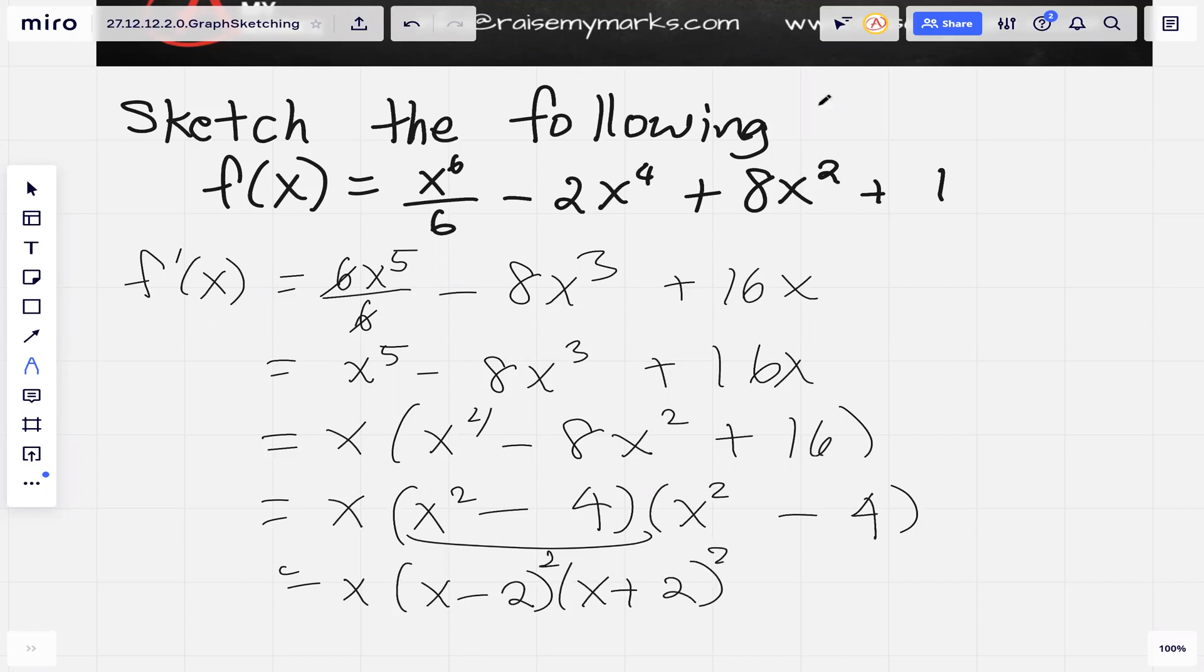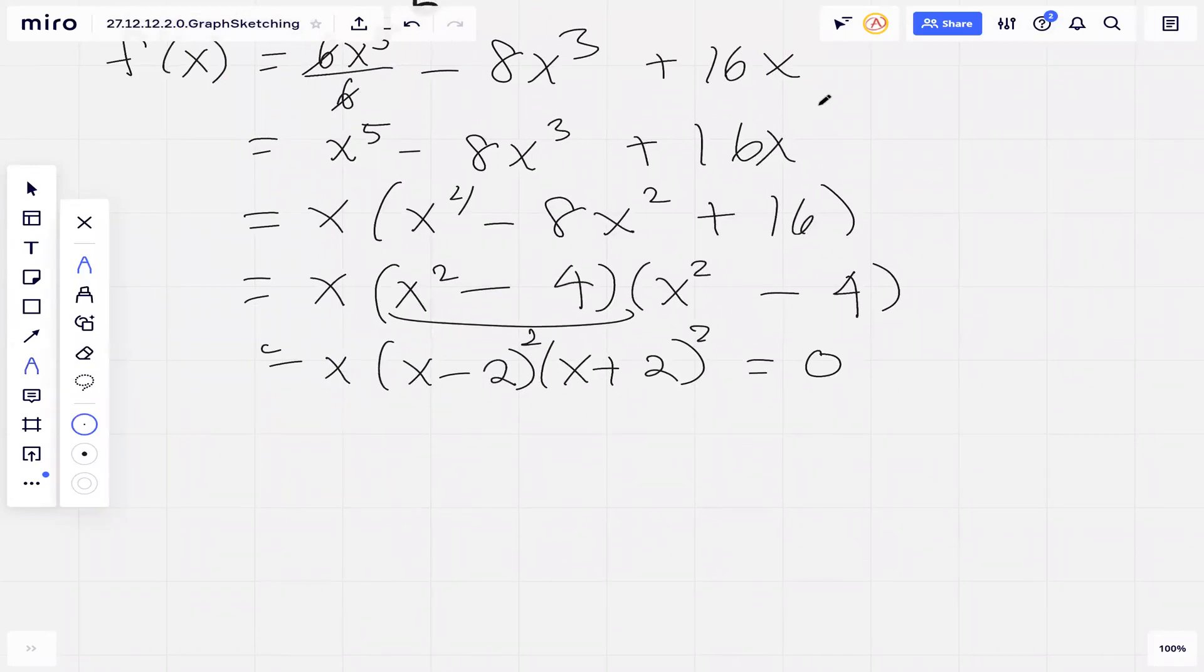We factored the derivative of our function. Now if we set it equal to zero, we can find the critical numbers, which are zero, two, and negative two. These are our critical numbers.